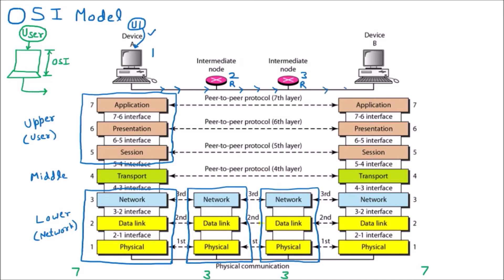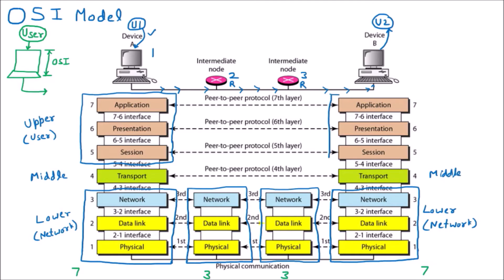Further, the data is going from the wire to the computer, and here we have user two receiving the data. Both the user and the wire are involved, which means all the layers are required. The lower three layers help the network, and then the middle layer — the transport layer — provides data to the upper layers. The upper three layers are there interacting with the user.